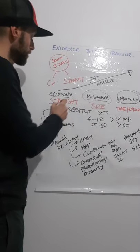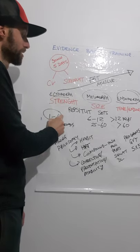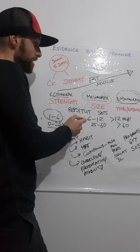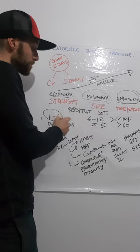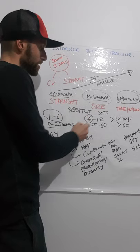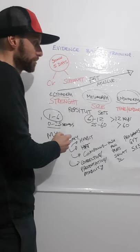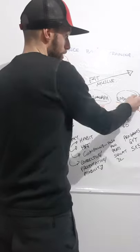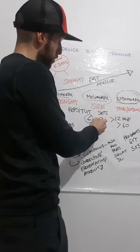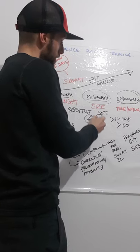If you're more of an endomorph, I would get you to do more of the 12 rep range. If you're more mesomorph, you'd probably go in the middle - your 8 to 10 rep range.